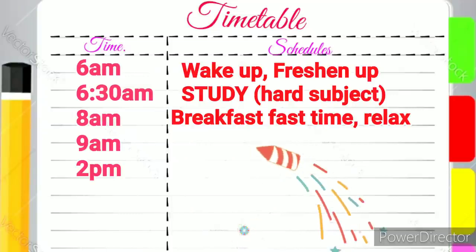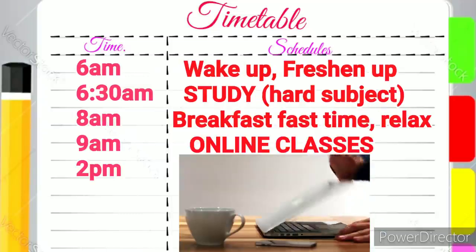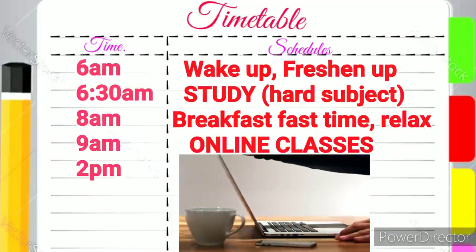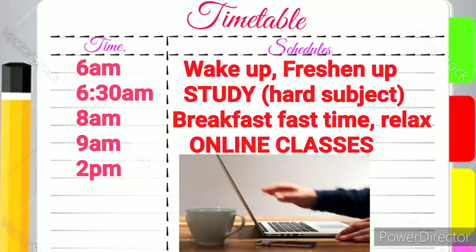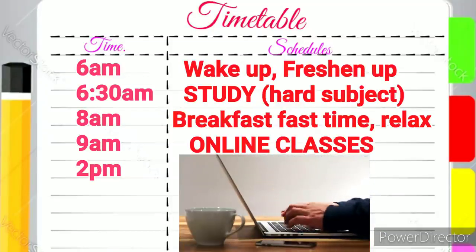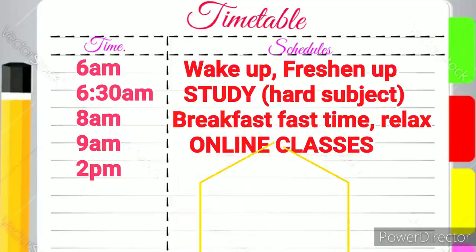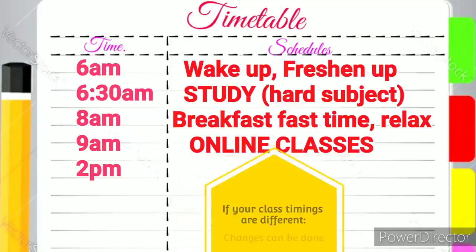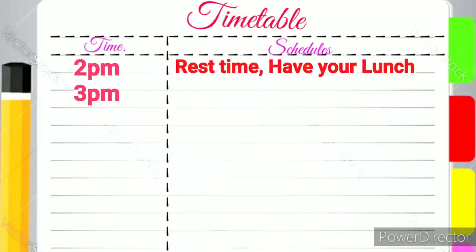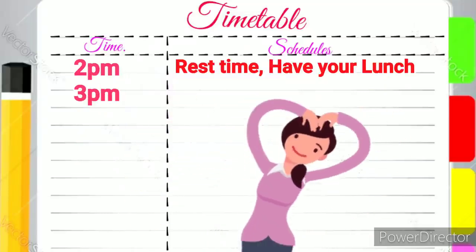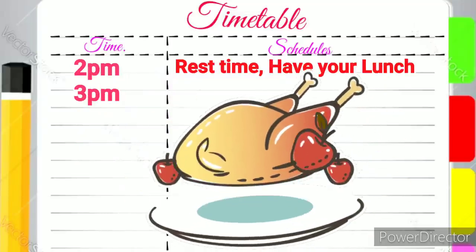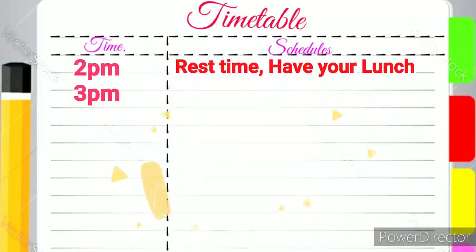9am to 2pm: This timing is assumed as your online classes. And if your class timing is different, you can make changes according to your preference. 2pm to 3pm: Rest time — have lunch and relax.